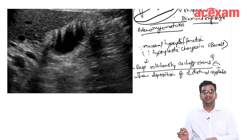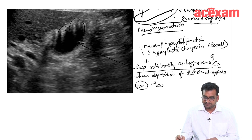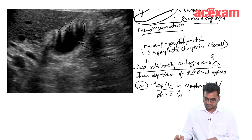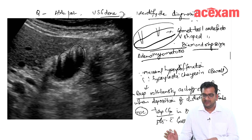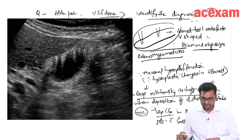It is not a premalignant condition, but the treatment of choice is laparoscopic cholecystectomy in symptomatic patients or patients with gallstones. This is the comet tail artifact or V-shaped artifact.